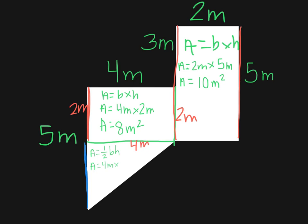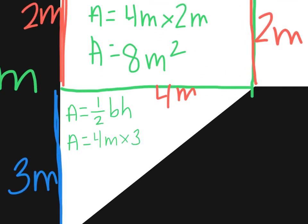And 5 minus 2 meters will be 3 meters. So 3 meters plus 2 meters gives us 5 meters. So our area is 6 meters squared.